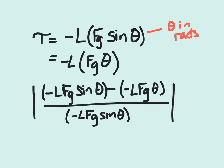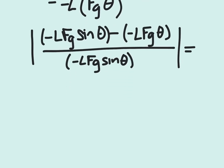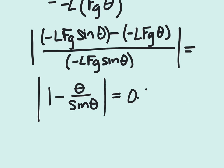Which will become 1 minus theta divided by sine theta in absolute value. And we want to set this equal to our percentage 1%, which is the equivalent of 0.01.